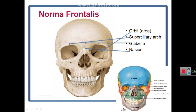At the junction of the medial one-third and lateral two-thirds of the superior orbital margin, there is a notch — sometimes a foramen — called the supraorbital notch or foramen. This supraorbital notch or foramen transmits the supraorbital nerve and vessels of the same name.